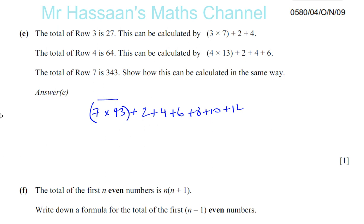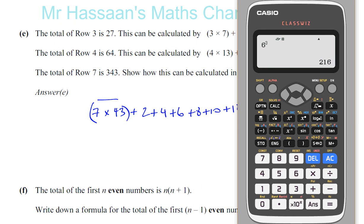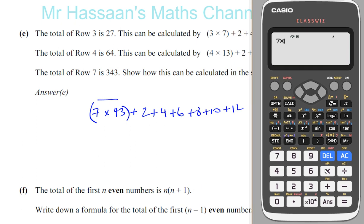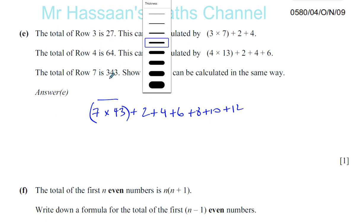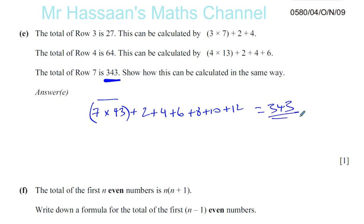So we have 7 times 43 plus 2 plus 4 plus 6 plus 8 plus 10 plus 12, and that gives us 343 as required. So that equals 343, and that's done.